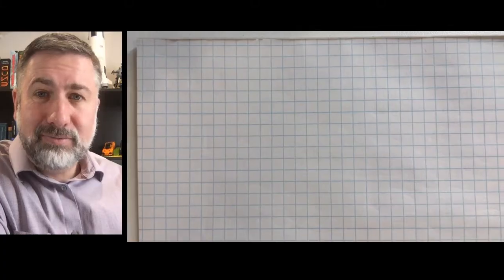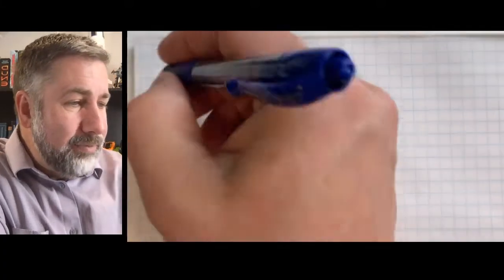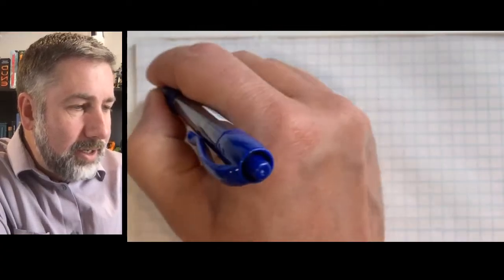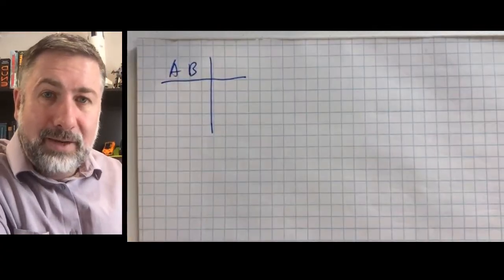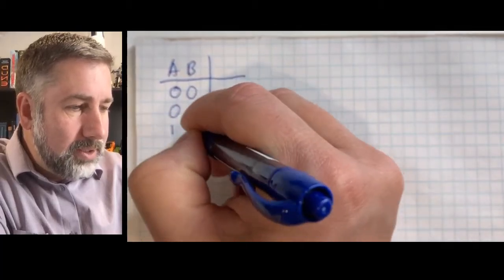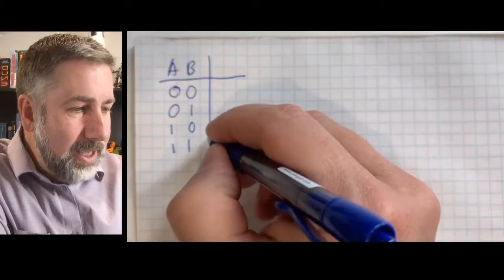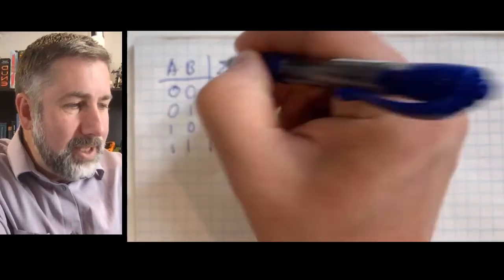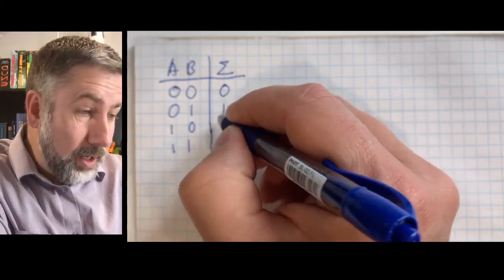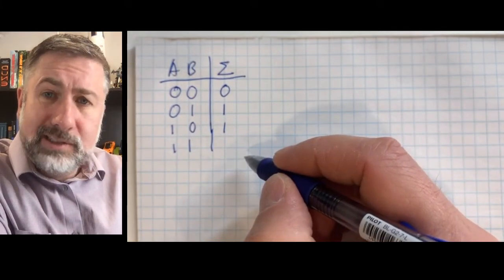So what does it mean to add two binary numbers? Well, if we have two binary numbers A and B, then we can add them together. There are four possibilities: zero-zero, zero-one, one-zero, one-one. Zero plus zero is zero, zero plus one is one, and one plus zero is one.